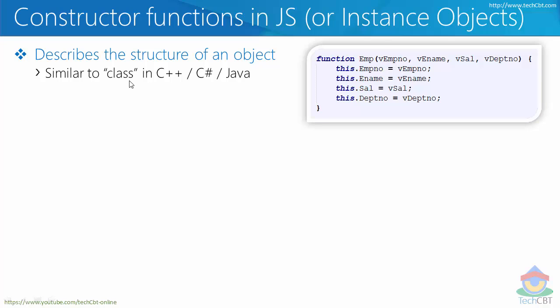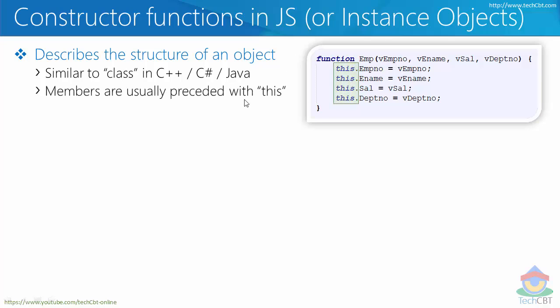A class is the most important feature of object-oriented programming. Whenever you define a class, you are essentially defining a template of its members, from which you are going to create more and more objects. In JavaScript you can have the same kind of syntax and features of a class using constructor functions.